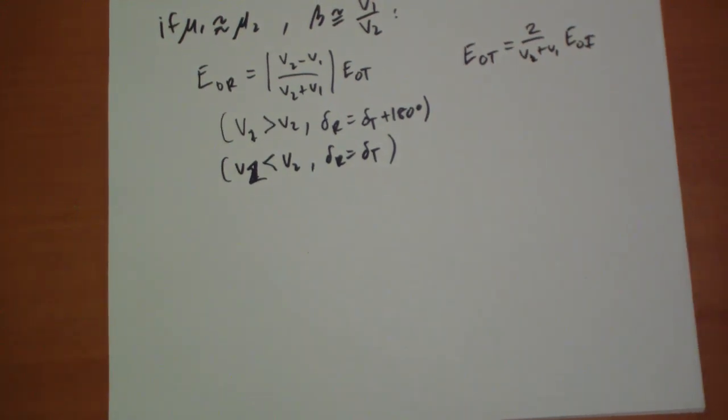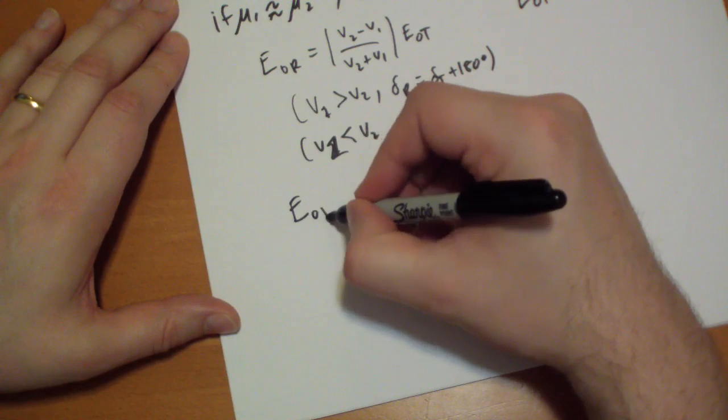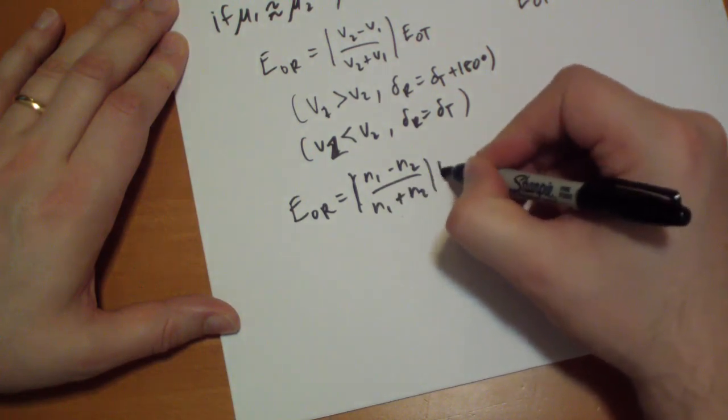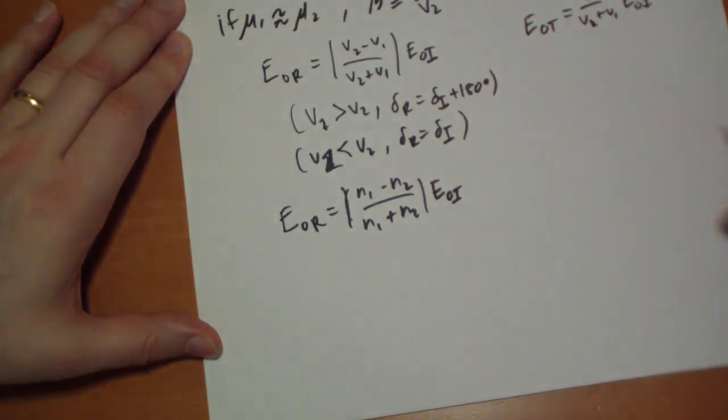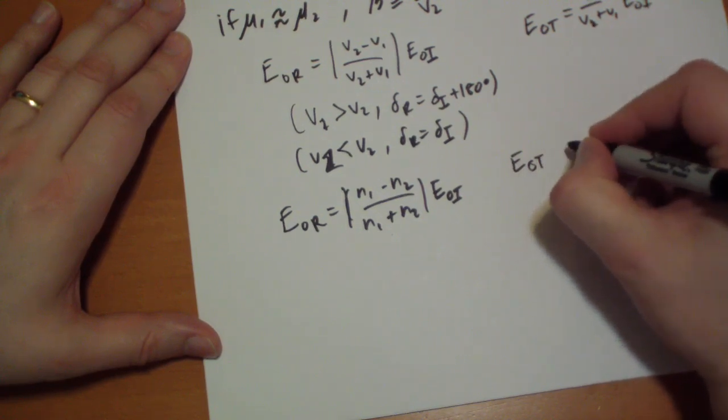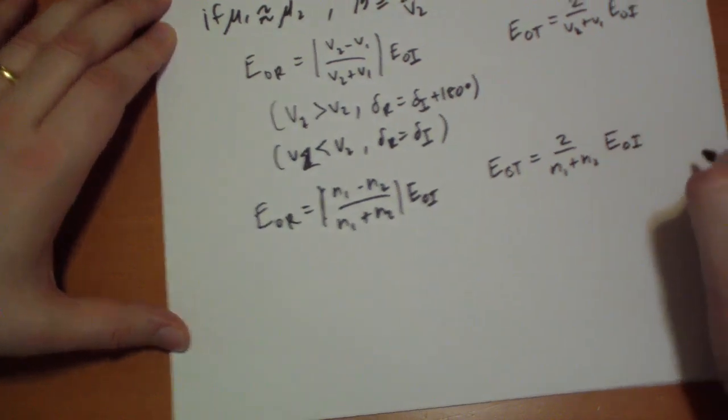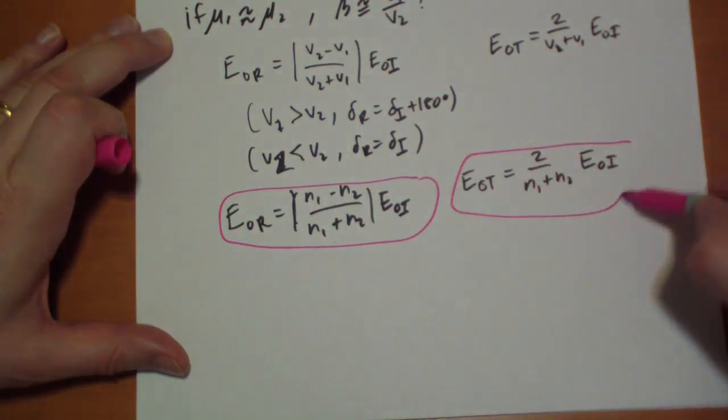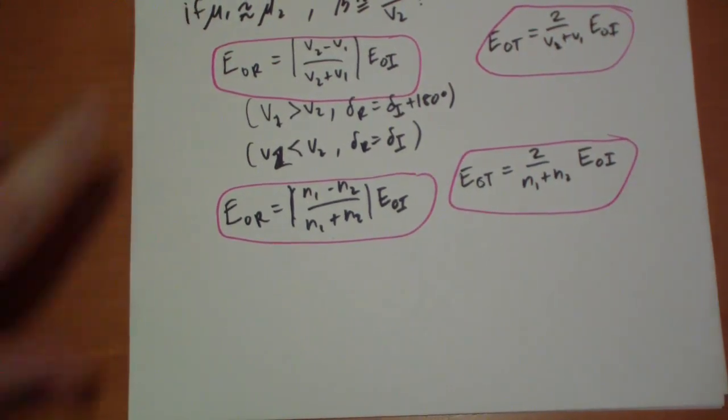And with that, we can also rewrite these in terms of the index of refraction, which is much easier to measure than the velocity. E naught r equals N1 minus N2 over N1 plus N2 E naught t. And E naught t equals 2N1 over N1 plus N2 E naught i. So that's two different ways to write these equations. And that only works if you have this condition that mu1 is about equal to mu2.